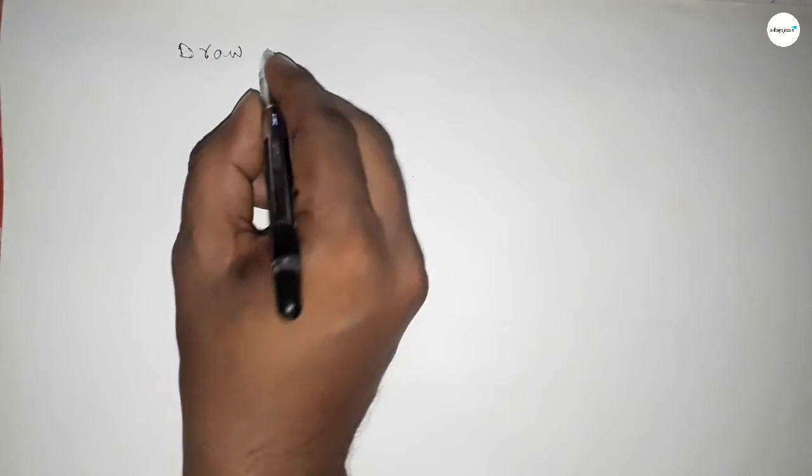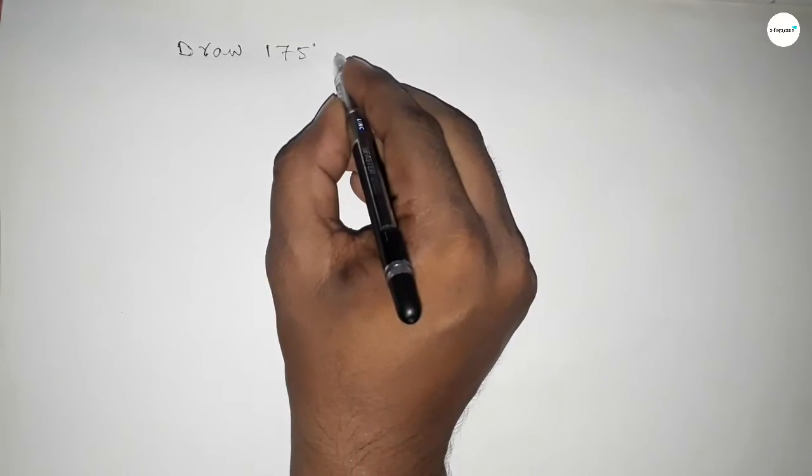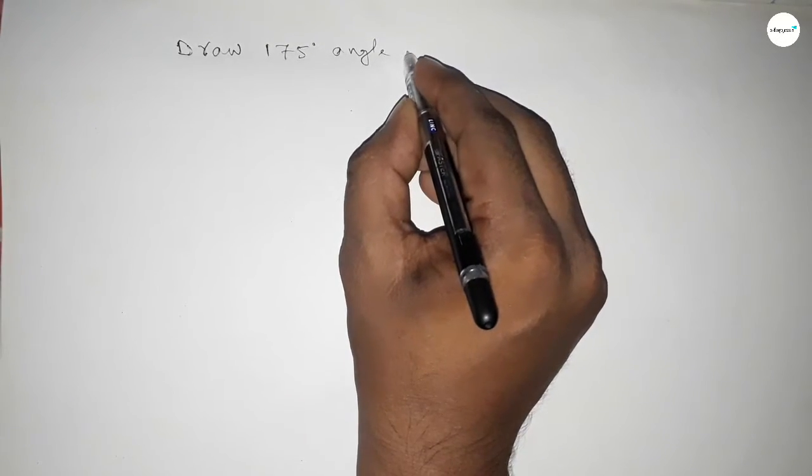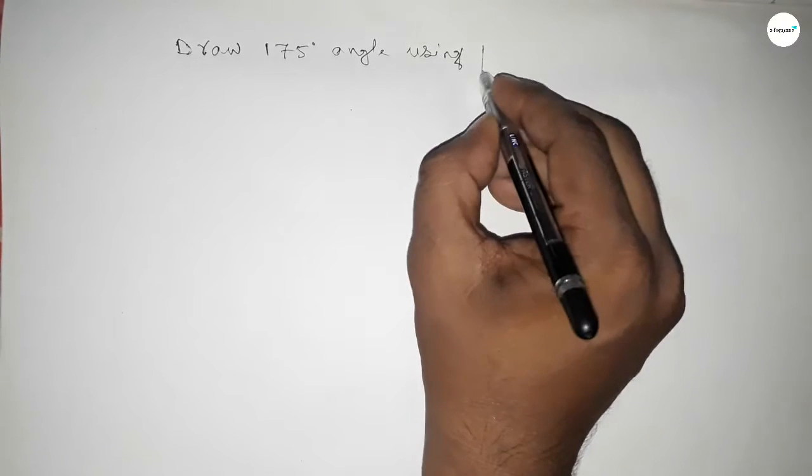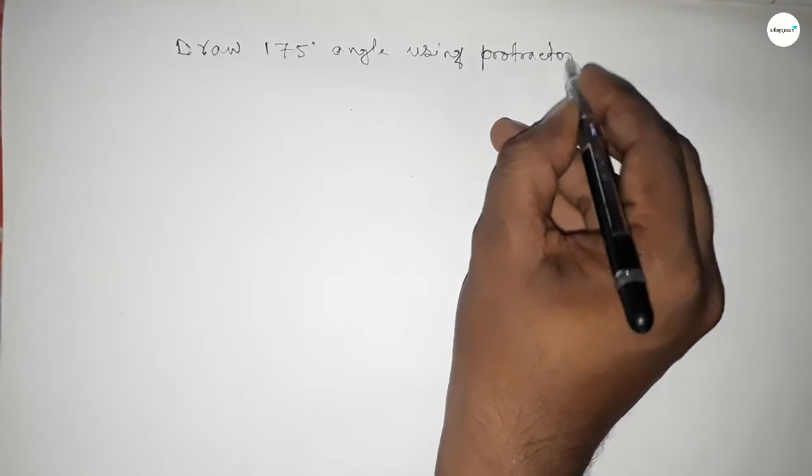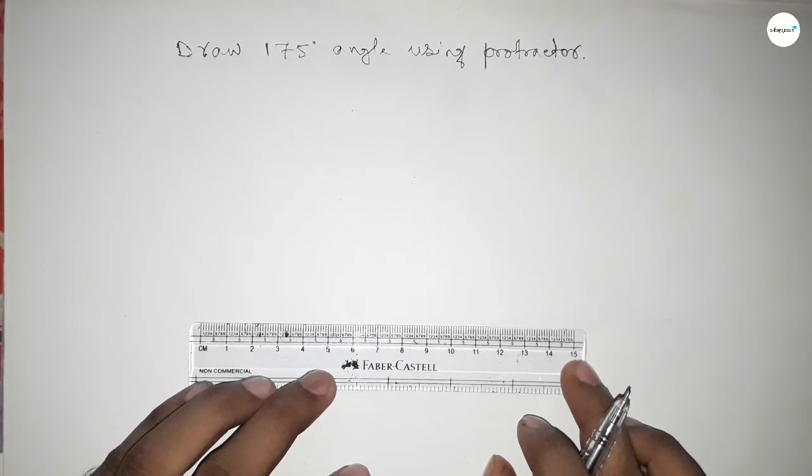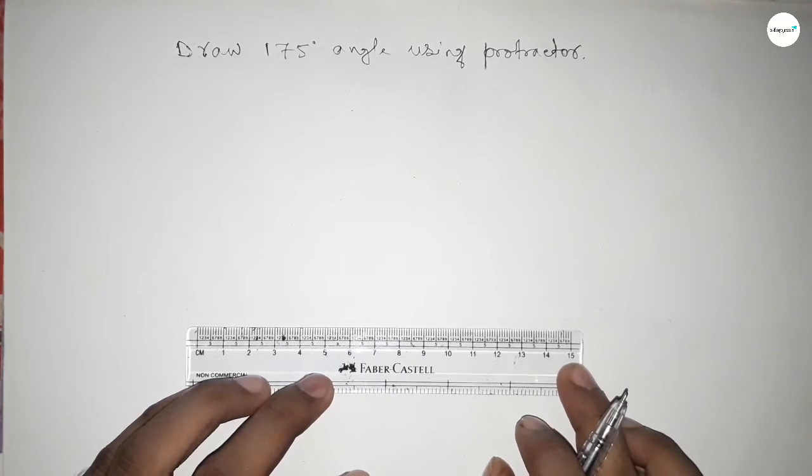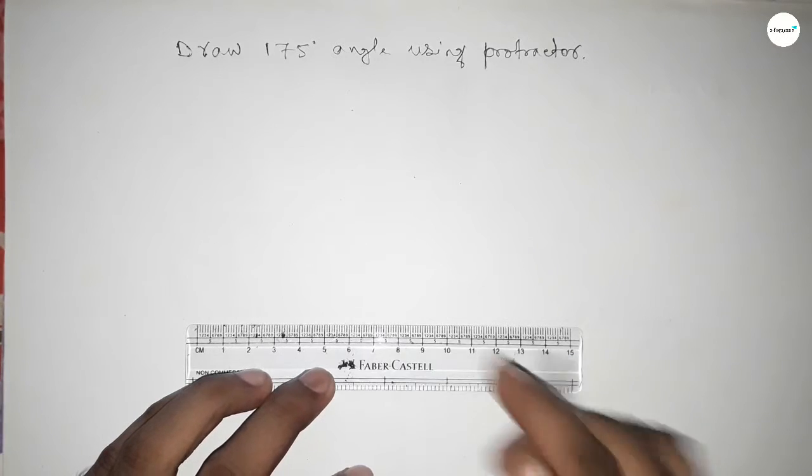Hi everyone, welcome to SSR classes. Today in this video we have to draw a 175 degree angle by using a protractor. So let's start the video. First of all, we have to draw a line here of any length.